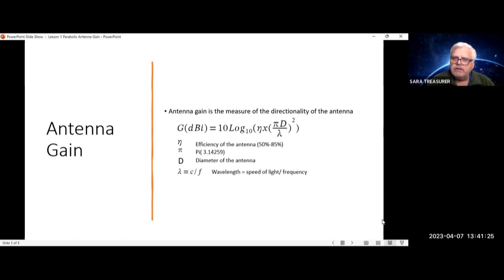Efficiency of an antenna: if you are an amateur antenna and not very well made, it's probably closer to 50%. If you're a high-end antenna, it's probably closer to 85%. Pi is your normal value of 3.14259. Diameter of the antenna is d in meters. Wavelength is the speed of light over frequency.